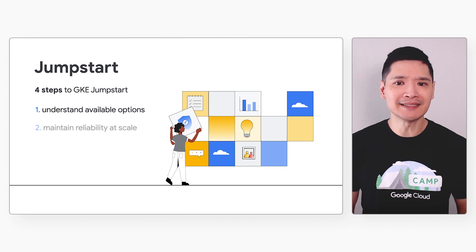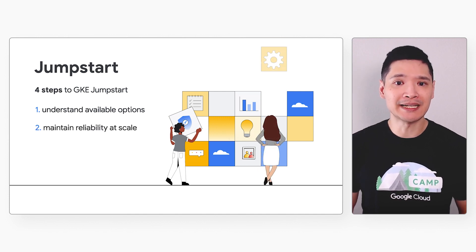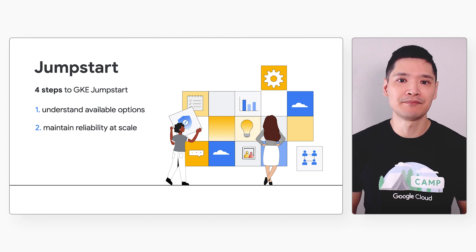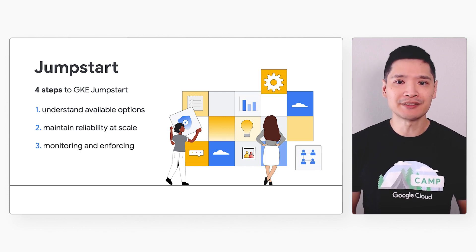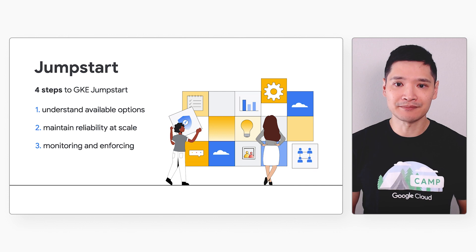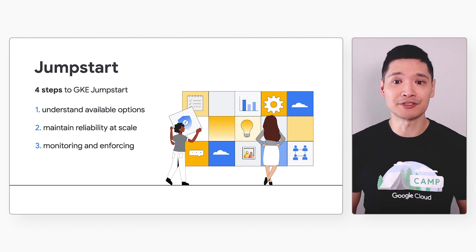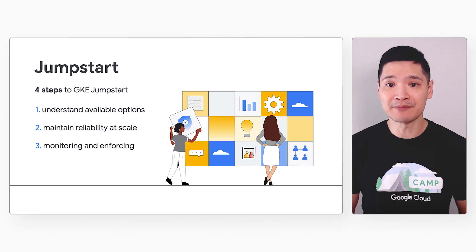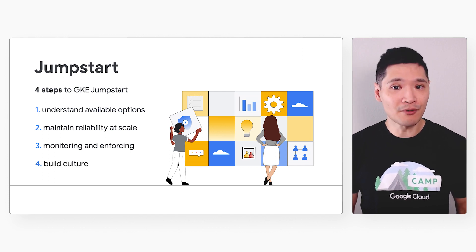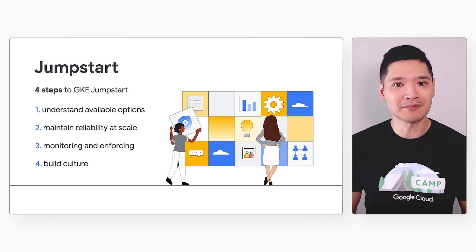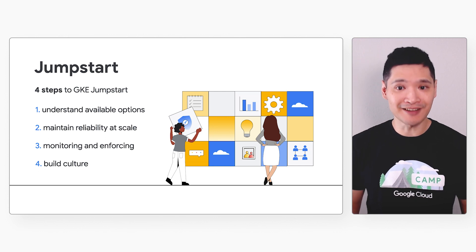The second step is learning how to maintain reliability as your application is scaled up or down automatically by GKE. The third step is monitoring and enforcing — helping your company's platform and infrastructure teams monitor resource usage and make sure everybody is following company policies. And fourth, there's culture: how can your company kickstart a FinOps culture to focus on cost efficiency?